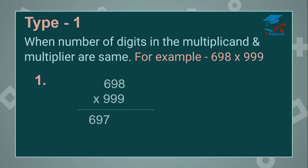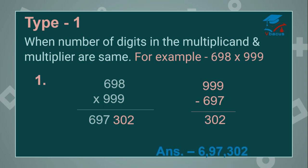Now subtract 697 from 999. Then your answer will be 302. So you can write 302 in the second part. So your answer will become 6,97,302.